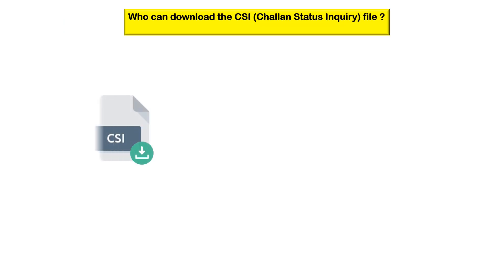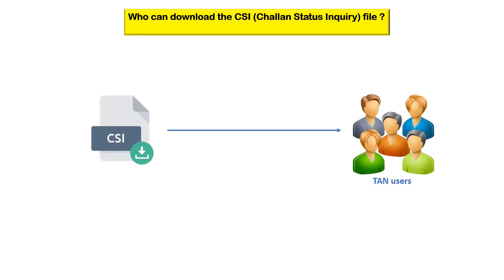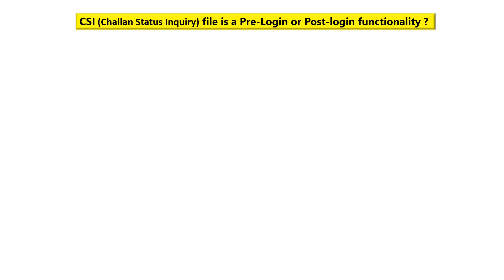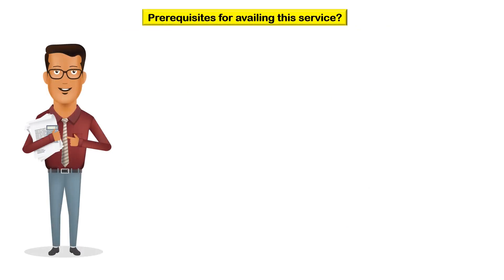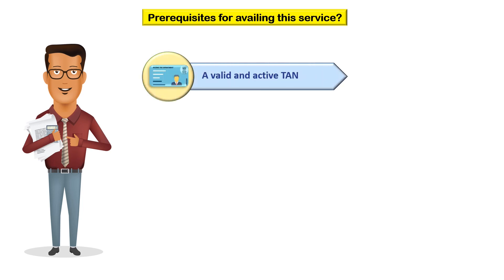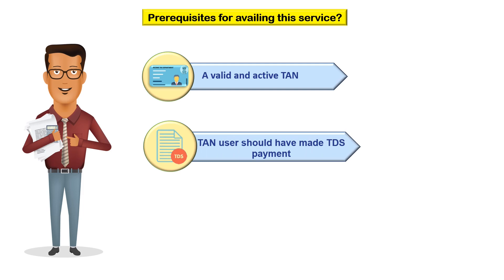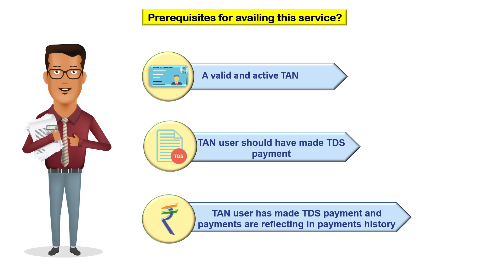The CSI file can be downloaded only by TAN users. The file can be downloaded both in the pre-login as well as post-login functionality. For downloading the CSI file, you are required to have a valid and active TAN, and the TAN user should have made TDS payments which should be reflecting in the payments history.